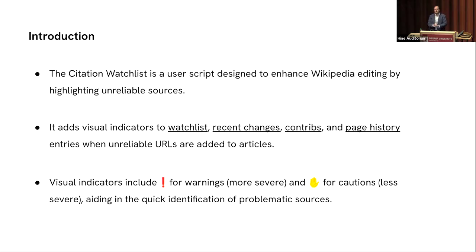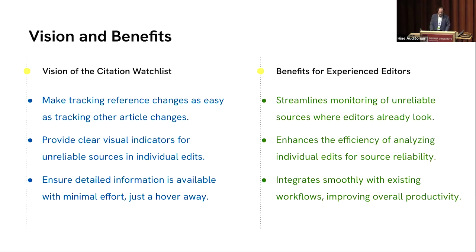Basically, anywhere where you see a feed of revisions to articles, you can see these indicators pop up whenever a certain kind of source is added to an article. We use a big red exclamation point for warnings — the most severe level — and a caution hand for things that are less severe. The idea is to make it easy to find when a problematic source is added to an article.